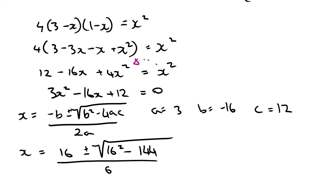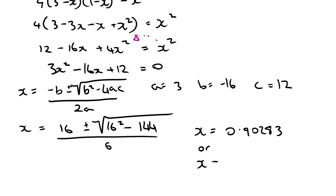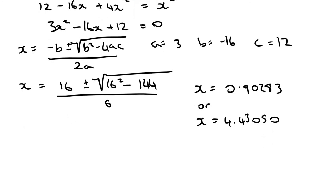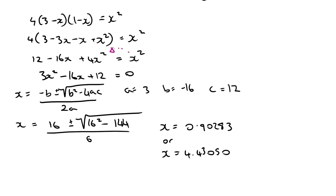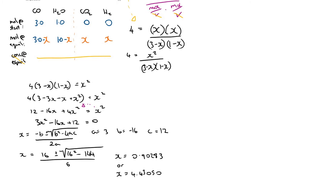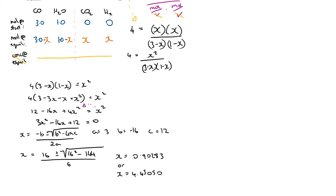Plugging into the calculator: if we take 16 minus the square root, x = 0.9028; if we take 16 plus, x = 4.4305. We have two values of x, but we can't have both. When solving real-life problems with quadratics, one root is often extraneous. We started with only 1 mole of water and 3 moles of CO, so we couldn't have used up 4.4 moles. Therefore 4.4 is the extraneous root and we ignore it. The answer is x ≈ 0.9028.